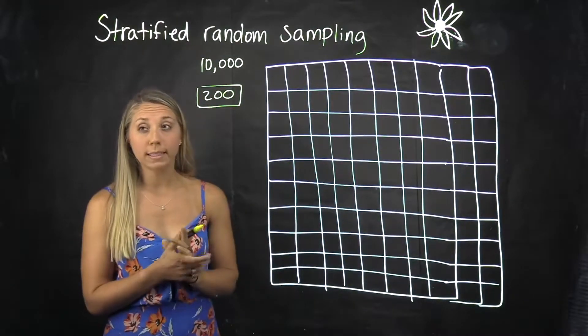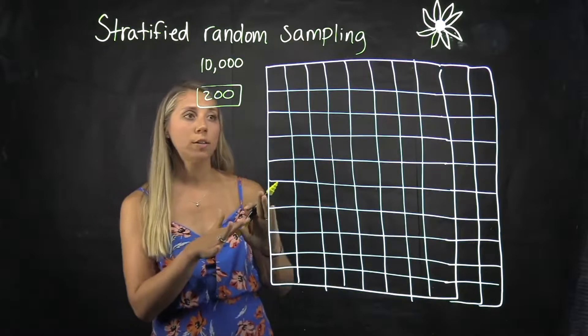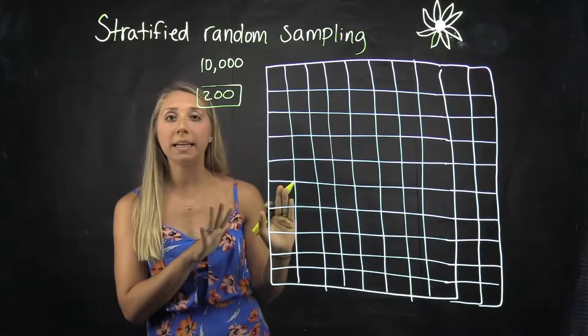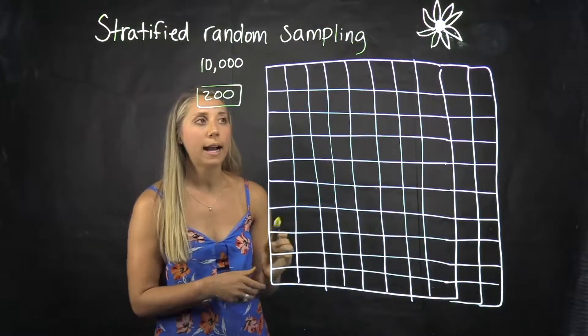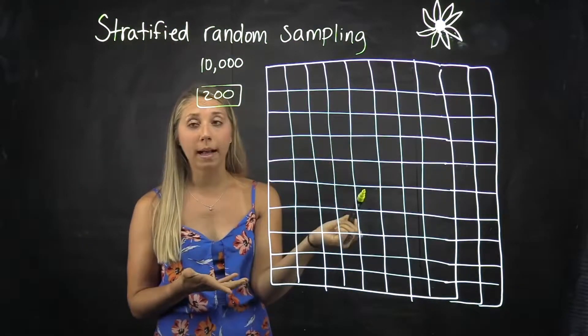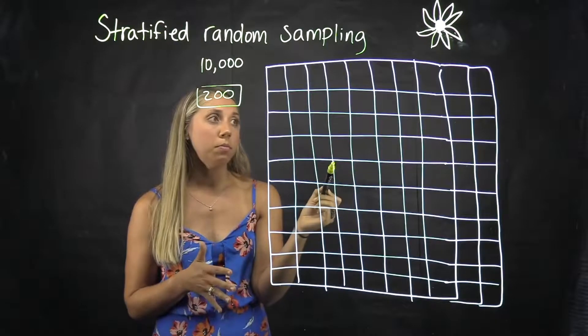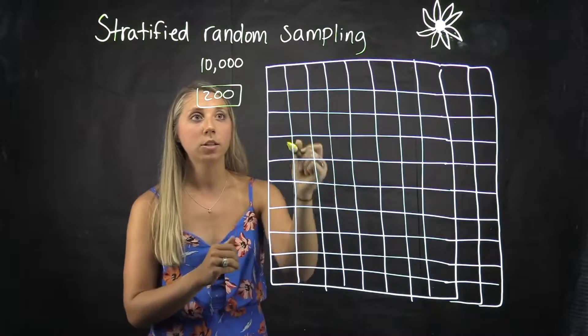So one way to go about doing it to assure that we have representation from the entire sunflower field is we have this little grid here and I created plots. There's 100 plots here, so there's 100 plots of 100 sunflowers.